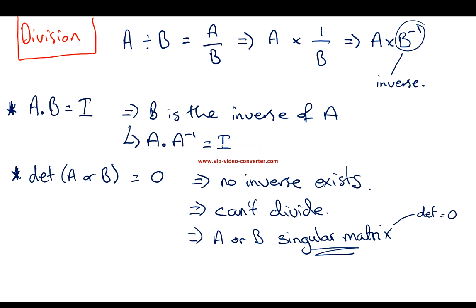There are just a couple of things to note when we're doing division. We're actually doing a multiplication by an inverse, which we've seen up here. If we get a case where 2 matrices multiply together equals I, the identity matrix, then we can say that B is the inverse of A. And if we get a case where any of the determinants equals 0, we have a singular matrix, and we ultimately can't divide because no inverse exists, and we can't divide by 0.